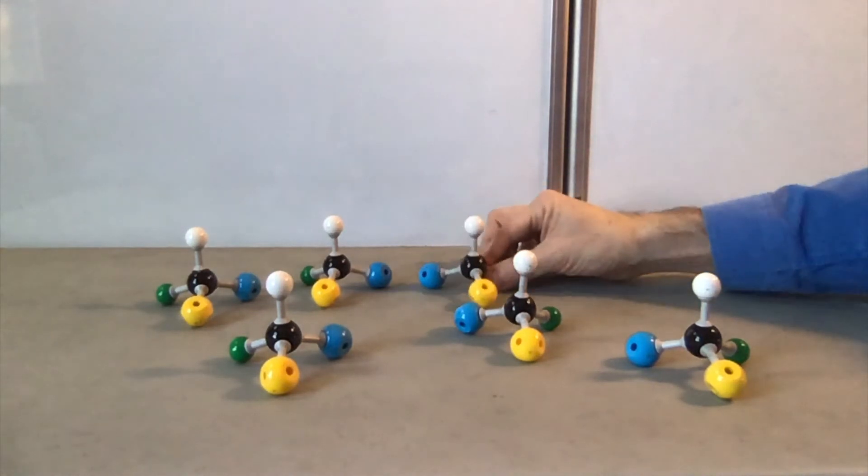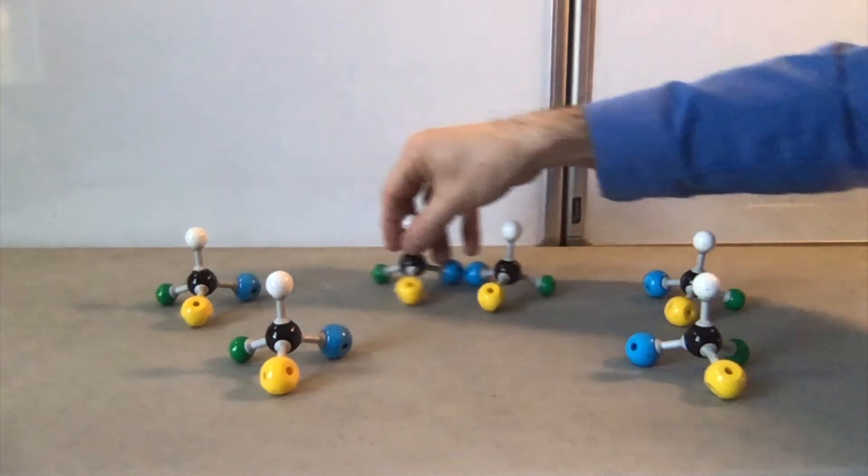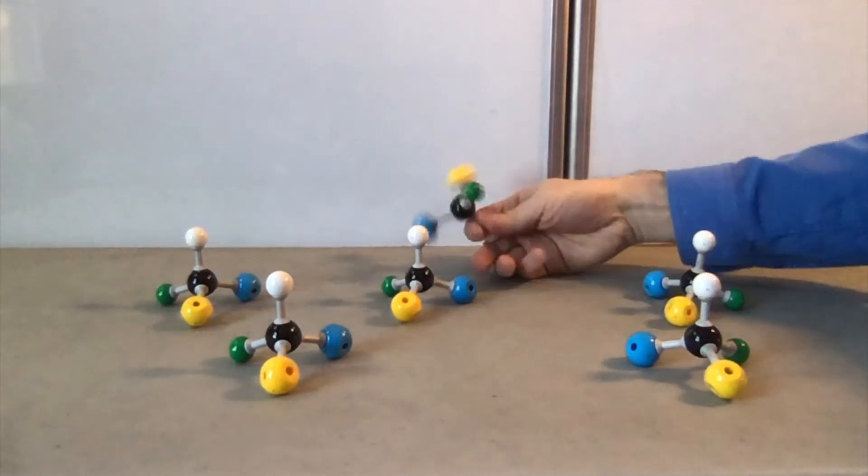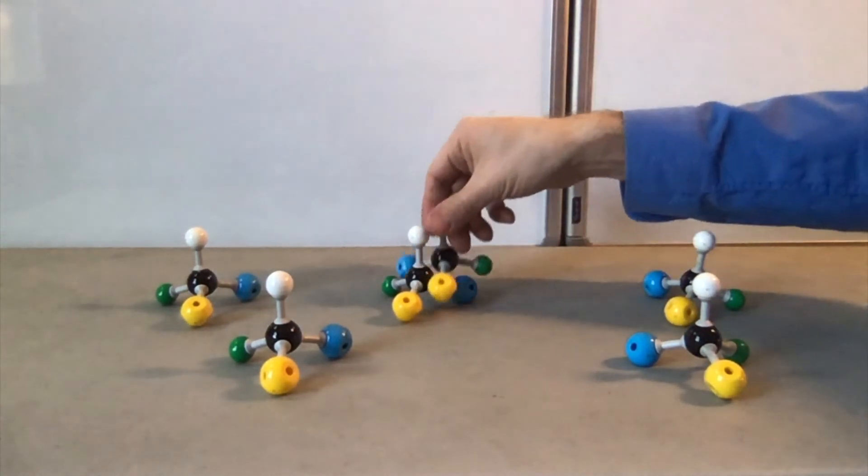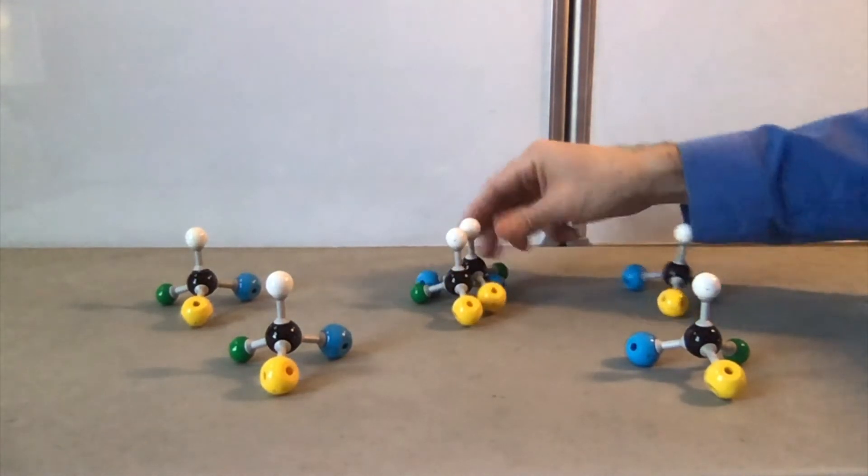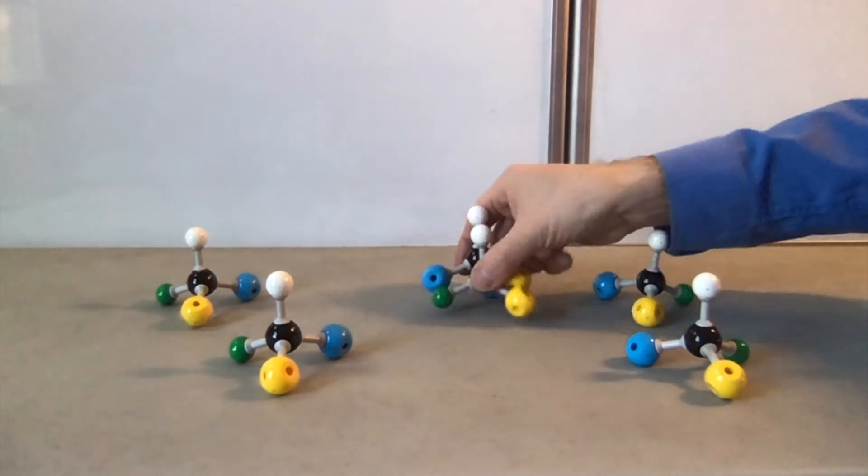But notice, if you have these two enantiomers, these mirror image molecules, there is no way to rotate one of them to make it exactly the same as the other. You have to line up the yellow and the white at some point, and when you do, the blue and the green are not lined up.